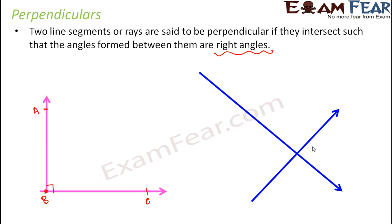Let's take more examples. You see that there are two lines which are intersecting at 90 degrees. Therefore, here also we can see that the two lines are perpendicular to each other.